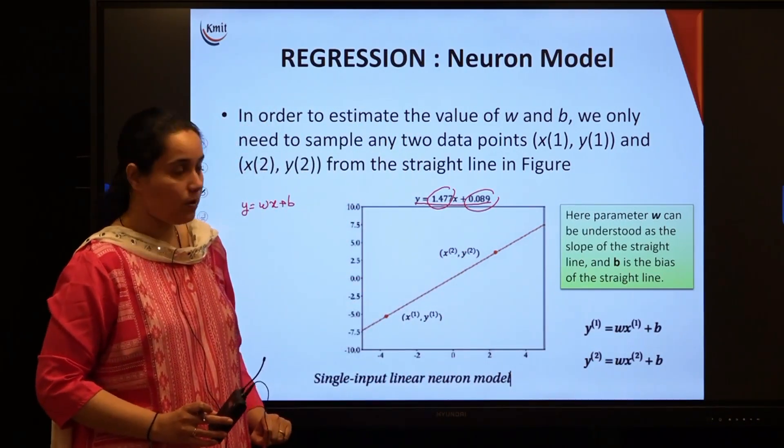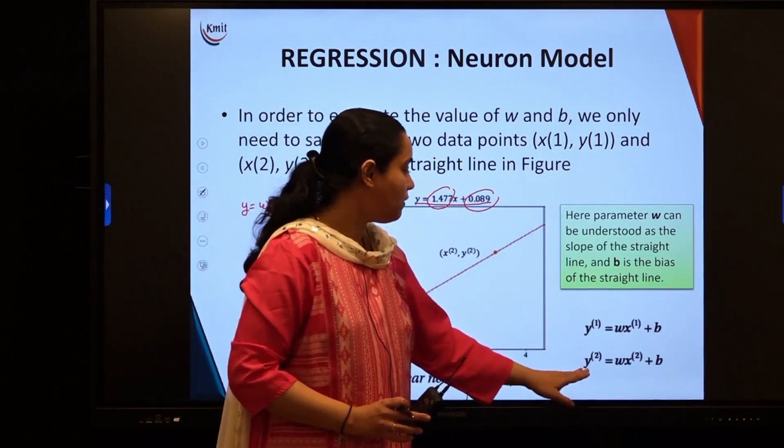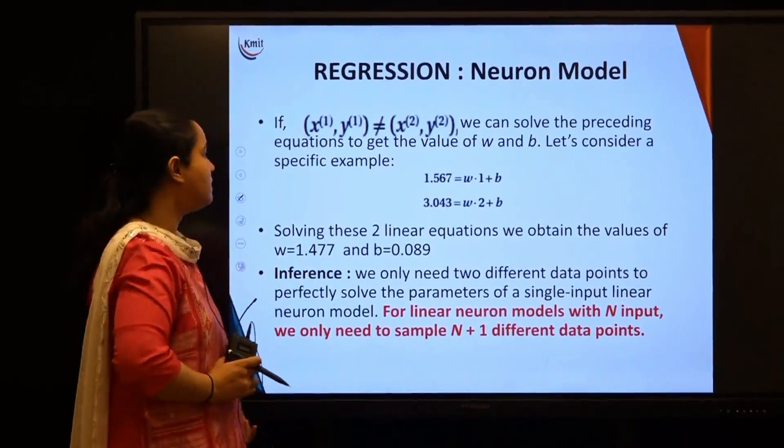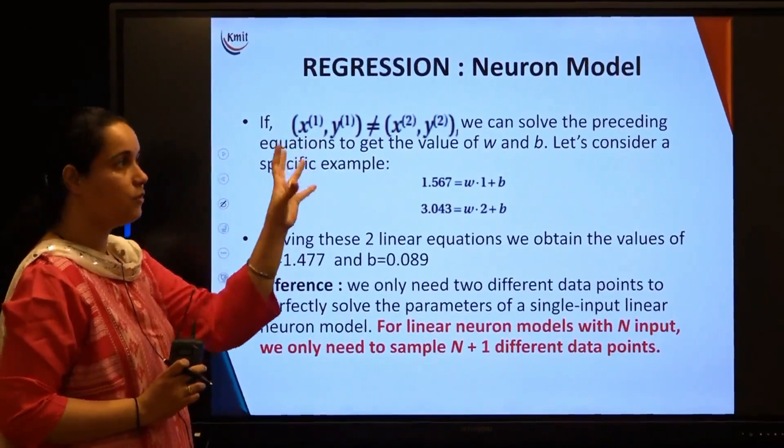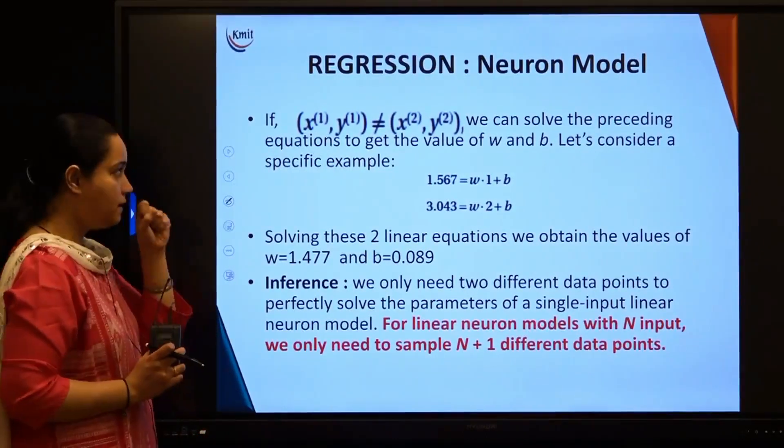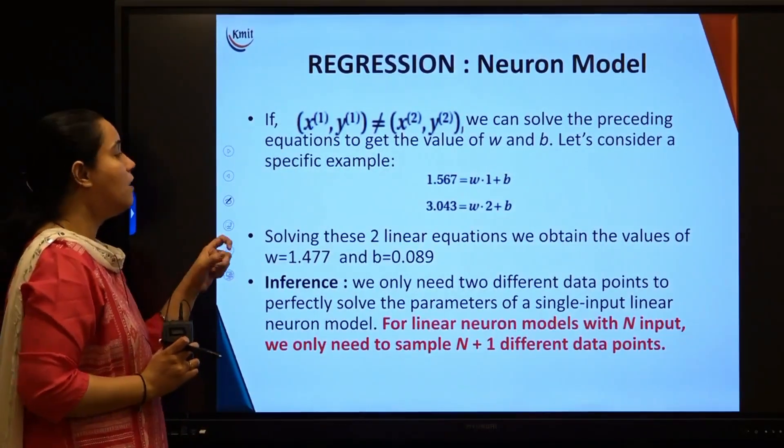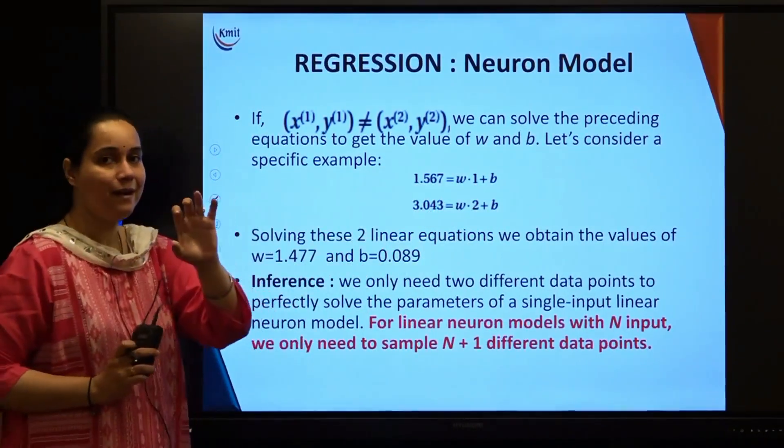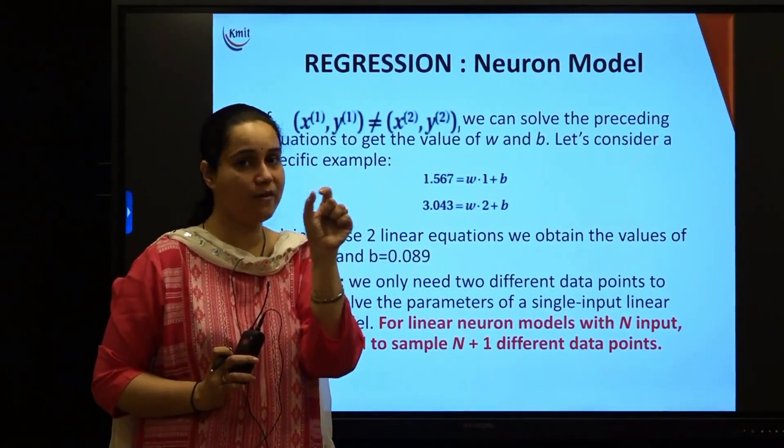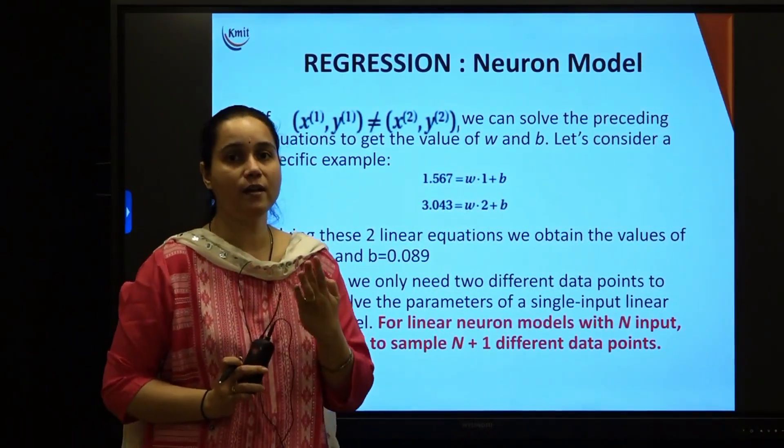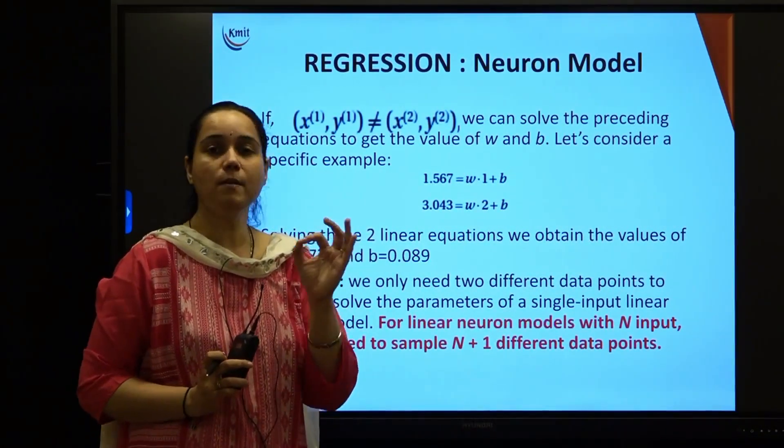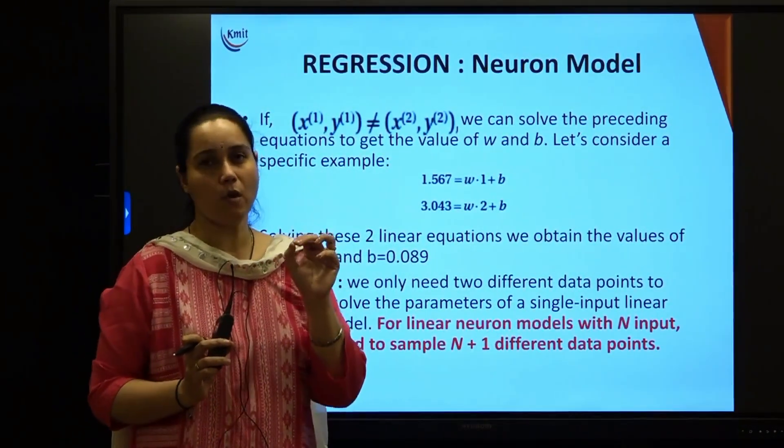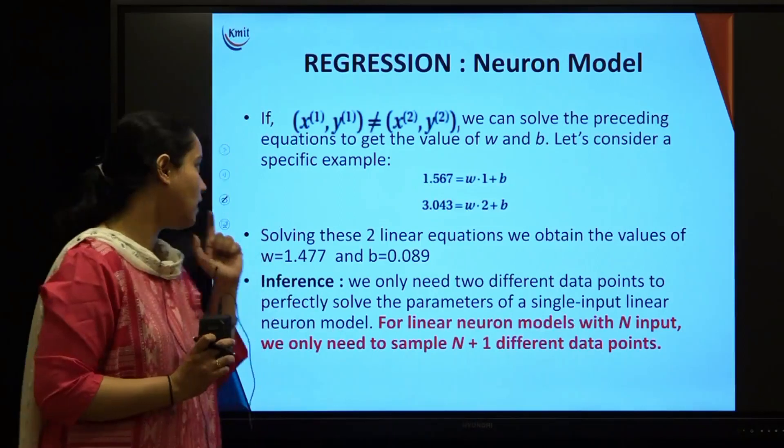What could I write as the equation of the line which is passing through these points? If I consider point x1, y1, I could write y1 equals wx1 plus b. Second, I will take the second point x2, y2, I could write y2 equals wx2 plus b. Given that these two points are not equal, we can solve these two points and find out the values of w and b.